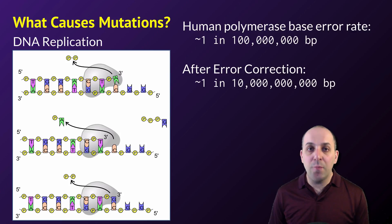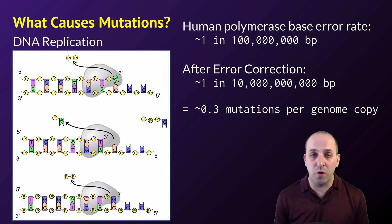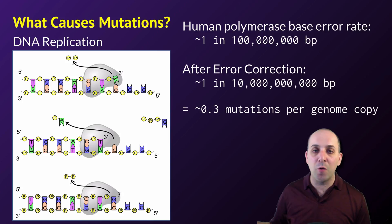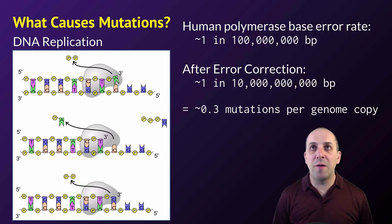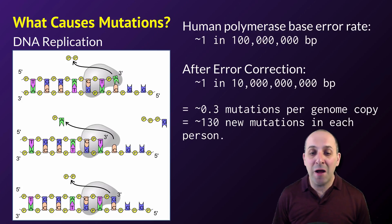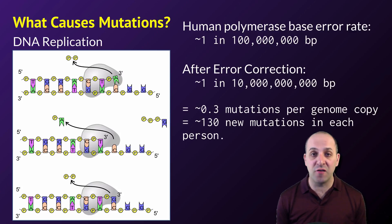That's certainly an incredibly low error rate, but it's by no means perfect. Anytime your genome is copied, there's roughly a 30% chance that a mutation will occur. If we follow it back to the point that the sperm or egg cell that gave rise to you was produced, all those rounds of replication mean there are about 130 new mutations in you that were not present in your parents, and that's true every time a new person is produced.